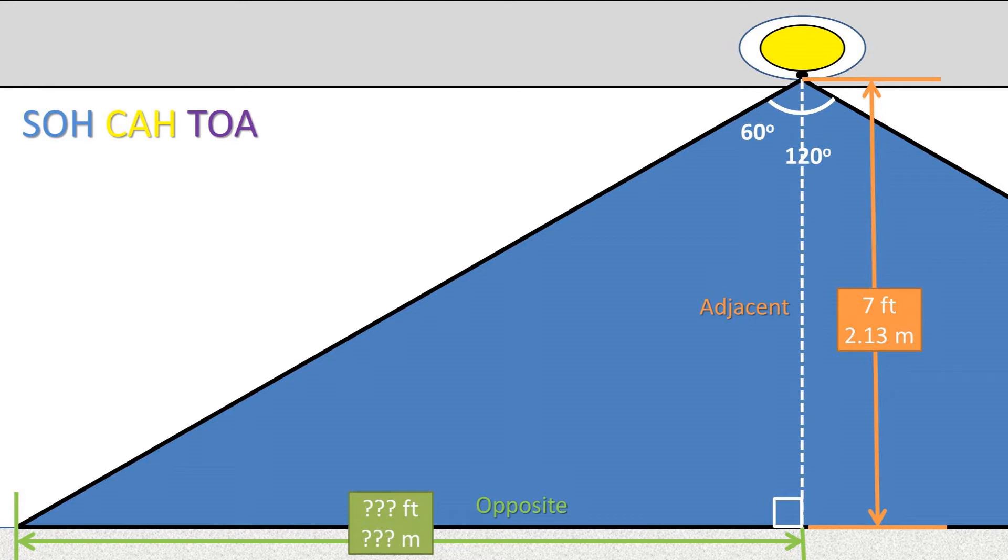Which part should we use? Well, we are working with the opposite side and the adjacent side. So we want to use the tangent of the angle is equal to the ratio of the side length opposite over the side length adjacent to that angle.